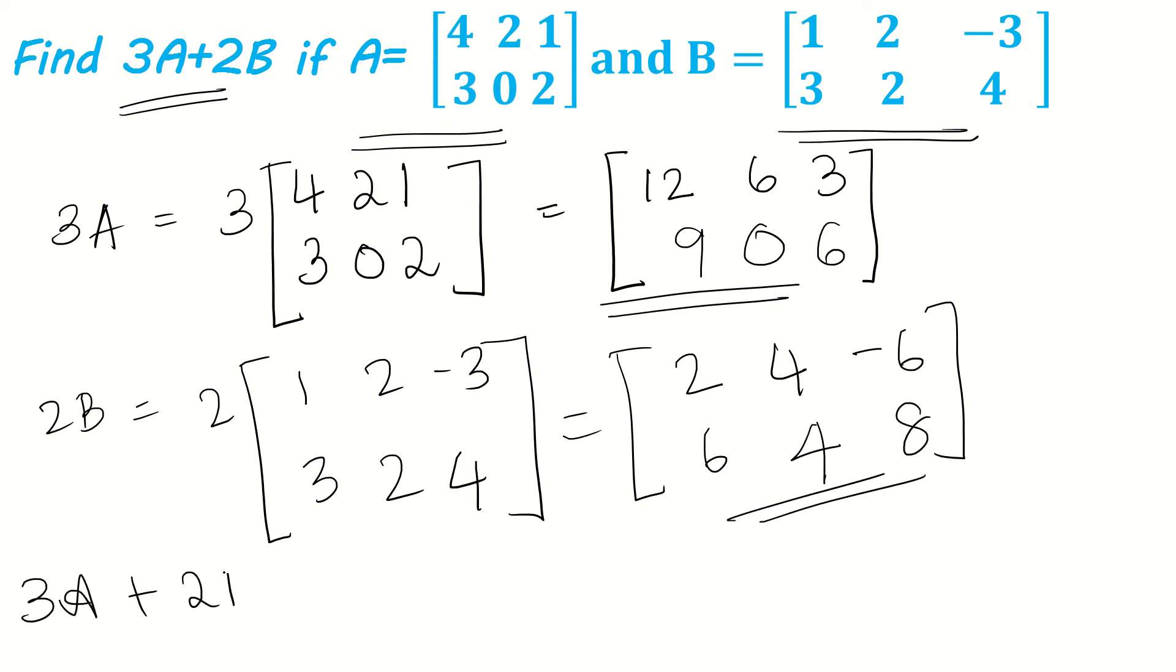We have 3A plus 2B. This is what we have to find, so add these two. 3A plus 2B will give us the sum of both of these. 12 plus 2 is 14, 6 plus 4 is 10, 3 plus minus 6 is minus 3, 9 plus 6 is 15, 0 plus 4 is 4, 6 plus 8 is 14. So this is 3A plus 2B. 3A plus 2B will give us another matrix with elements 14, 10, minus 3, 15, 4, 14.